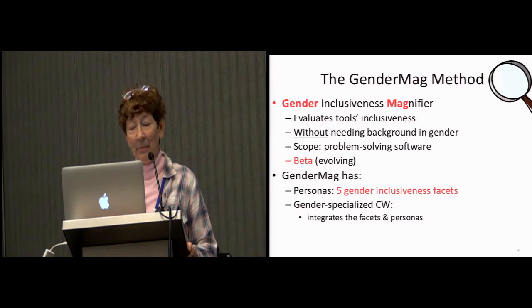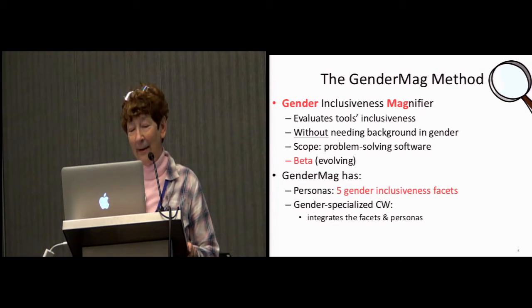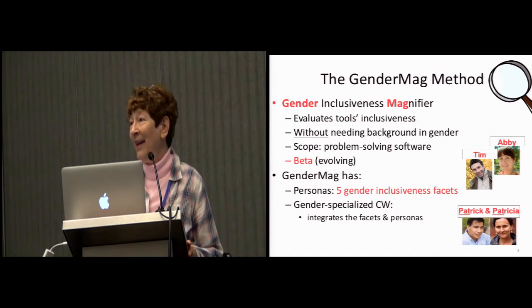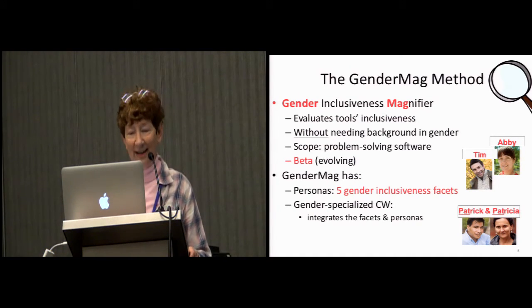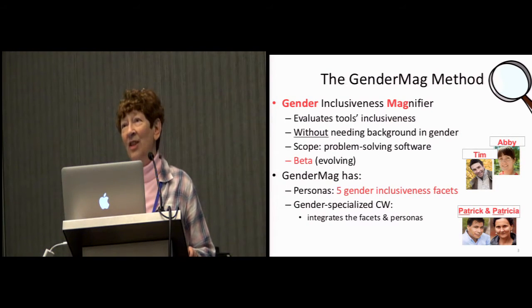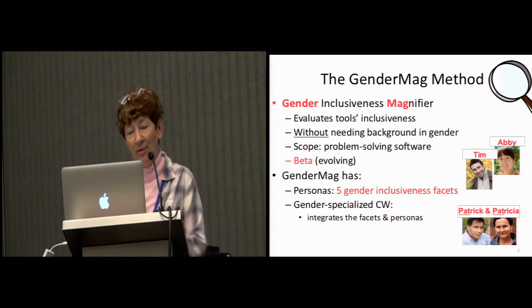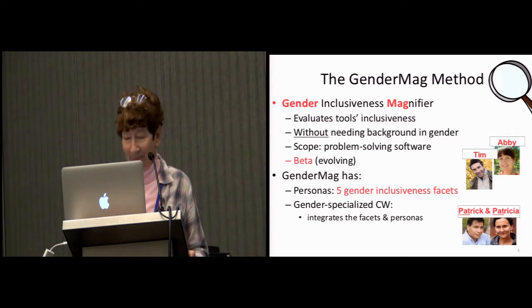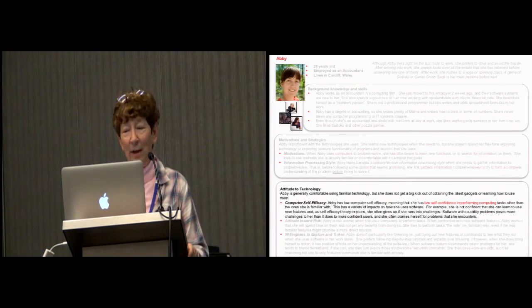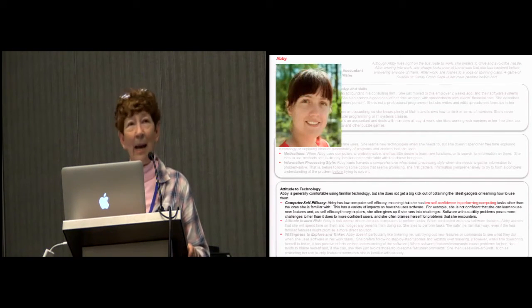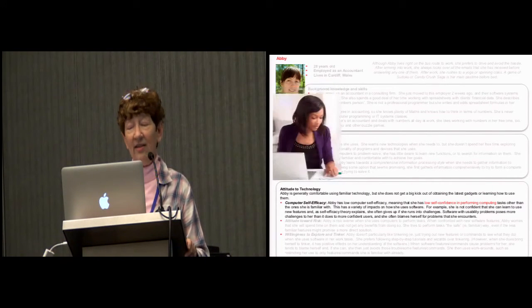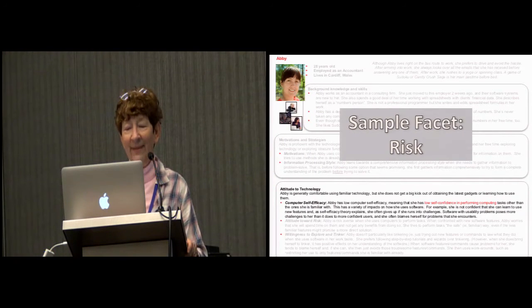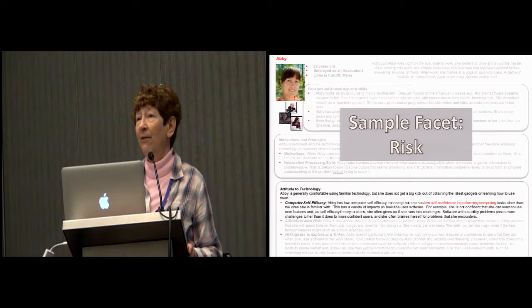GenderMag has personas — four personas whose whole job is to bring to life five gender inclusiveness facets. You'll get to know a little bit of one of the personas and a couple of the facets shortly. It brings all those things together with a gender-specialized cognitive walkthrough, whose whole job is basically to marry the thing into a process. Here's just a little bit about one of the personas: this is Abby. This is what Abby looks like, at least in this persona. Abby has alternative appearances as well — she can also look like an older woman, a man, or a younger student.